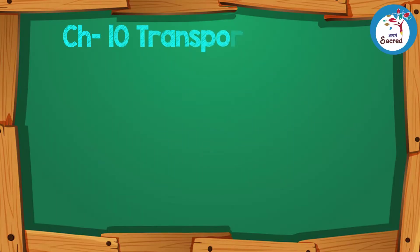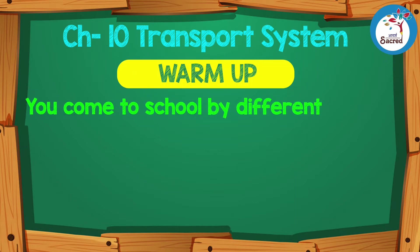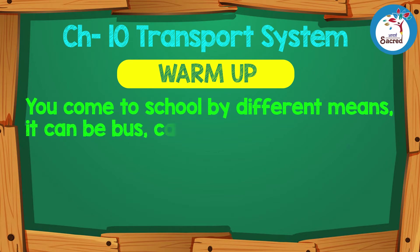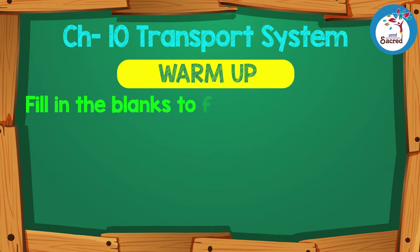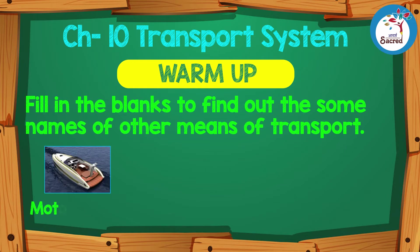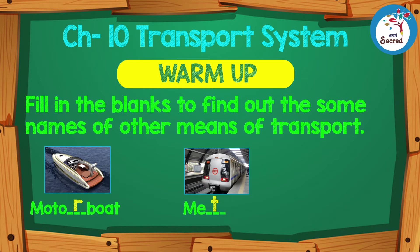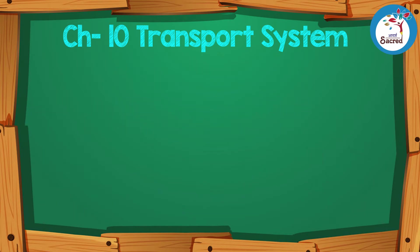Chapter 10: Transport System. You come to school by different means — it can be bus, car, bicycle, or maybe on foot. Fill in the blanks to find out some names of other means of transport: Motorboat, Metro, Train. Let's start!